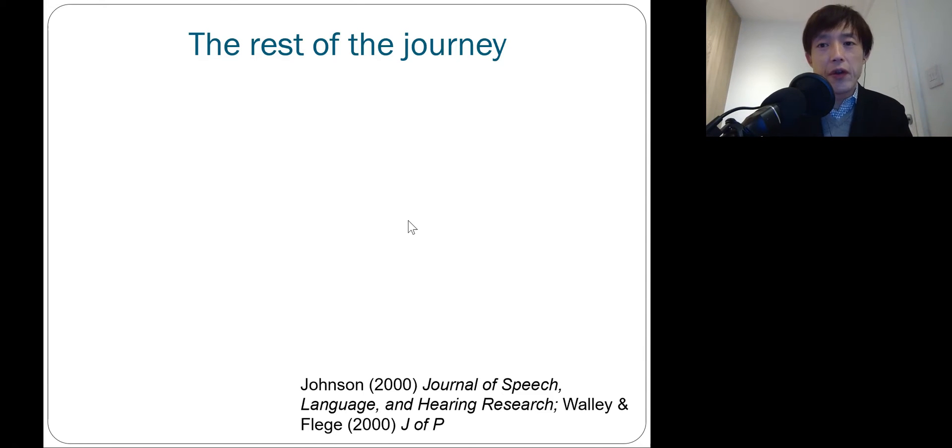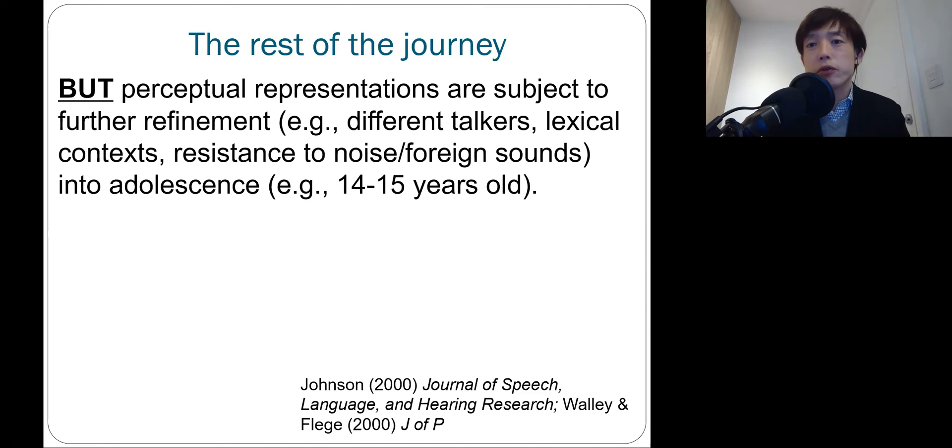But let's look at some unique research evidence coming from L1 acquisition literature showing that perceptual representations are actually subject to further refinement throughout childhood and all the way up to adolescence. So what this means is that the first language phonemes become available, but at the very same time, they're not as stable yet, meaning that they still need to be able to hear consonants and vowels produced not only by their parents, but also by their friends and other family members.